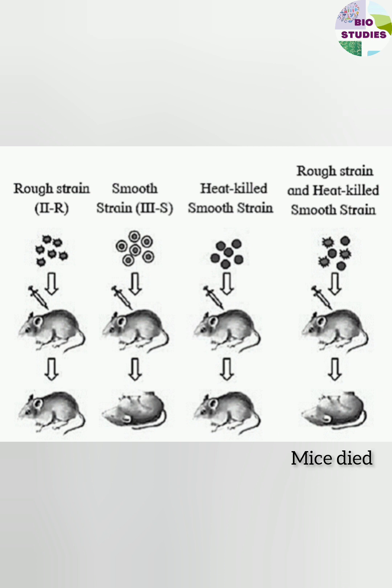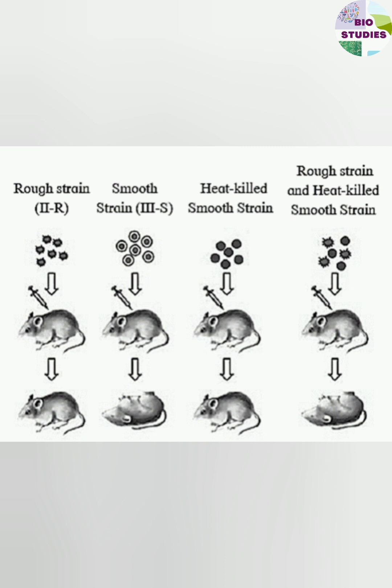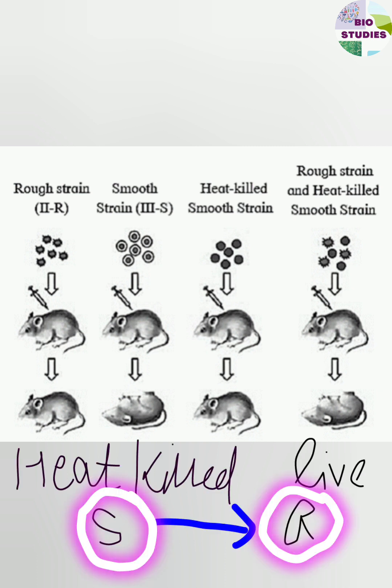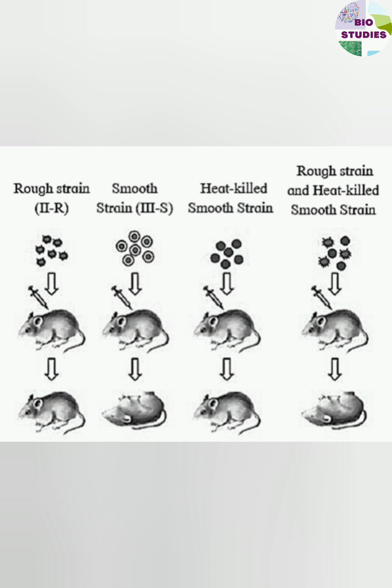How is this possible? According to Griffith, something was transferred from the heat-killed S strain to the live R strain that converted the R strain to S strain. This was later confirmed by another scientist, Avery.